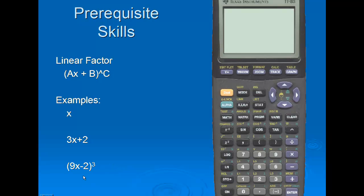And lastly, if we look at the quantity 9x minus 2 cubed, the coefficient for x, a, is 9. b would be negative 2, and our power c would be 3. This is still considered to be a linear factor.